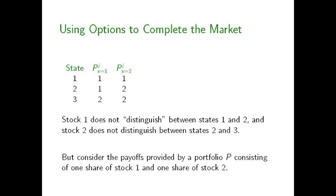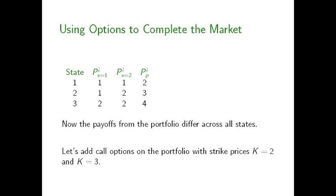But suppose we consider the payoffs made by a portfolio consisting of one share of each of these two stocks. By buying one share of stock one and one share of stock two and combining them into a portfolio, the portfolio is worth two dollars in state one — since each company's share sells for one dollar. The value goes up to three in state two, since the price of a share in company two rises to two. And in state three, the portfolio is worth four. So let's now consider this portfolio of the two stocks and also add call options on the whole portfolio — one with strike price K equals two, the other with strike price K equals three.